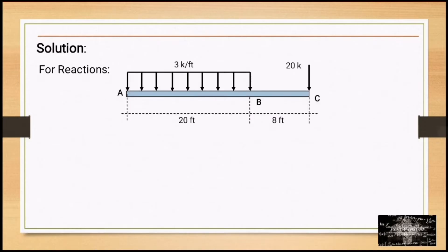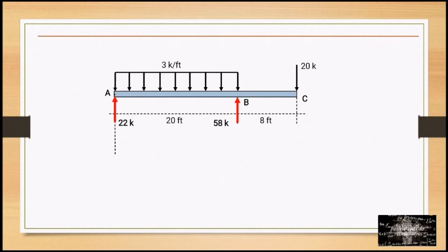For the reactions: at point A we have 22 kips, and at point B we have 58 kips. Since the required values are at point C, we need to cut the segment near C at a distance X from A.